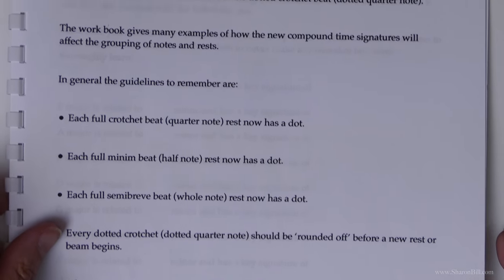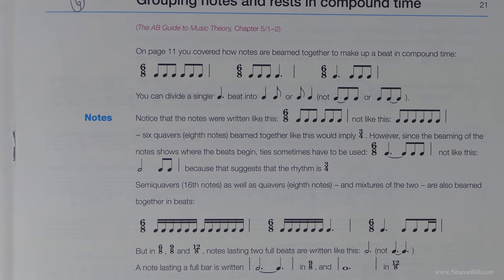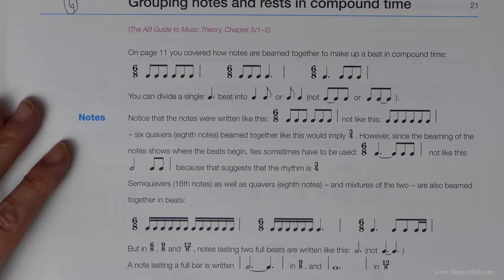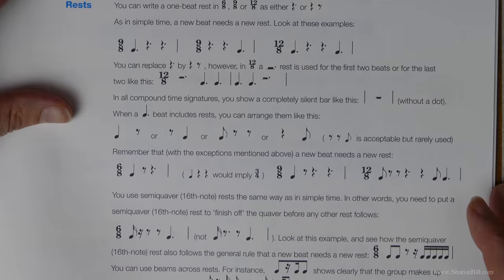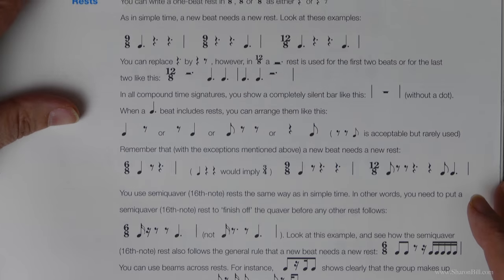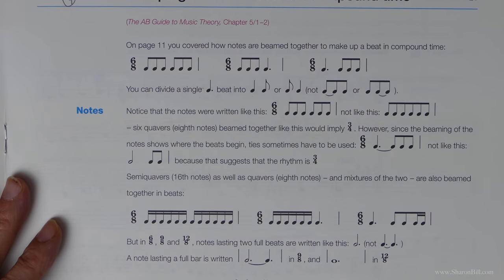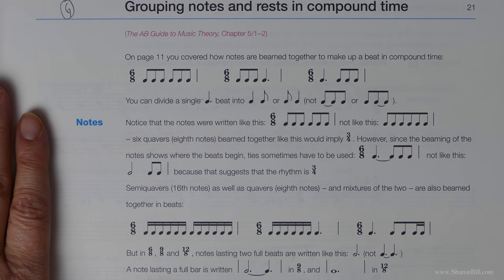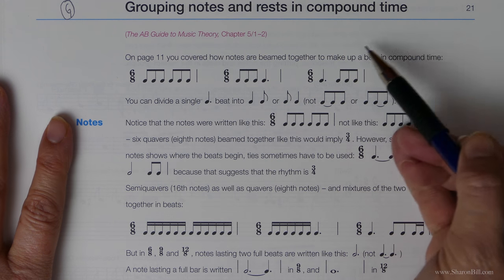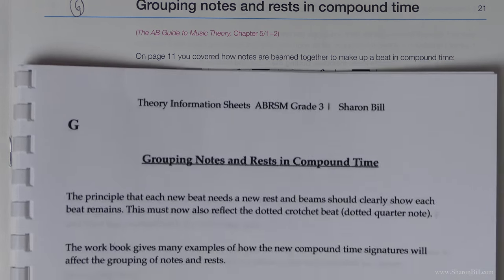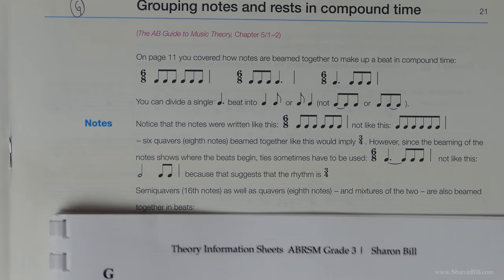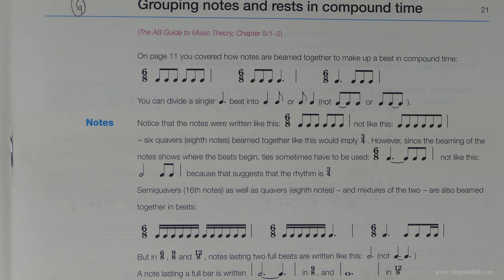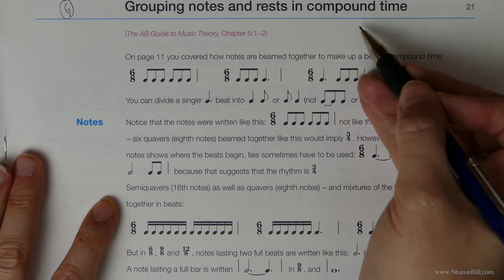There's a little bit of information there that I've condensed for you. Now in your workbook there's lots and lots of information, so do take the time to read through page 21. It's really, really important information that you need to consolidate all that we've done so far on notes and rests in compound time. I've condensed those into little sentences — just the general points to remember — in the PDF document. The most important thing to grasp is that we're always grouping things in threes because we're in compound time.